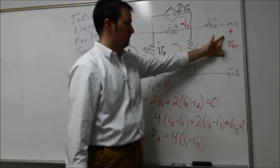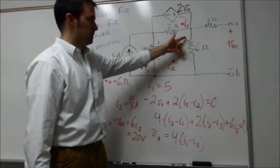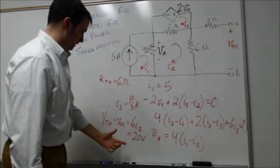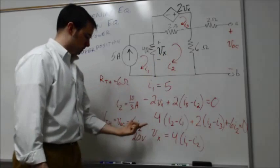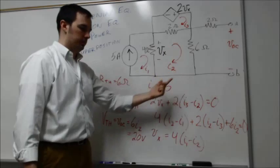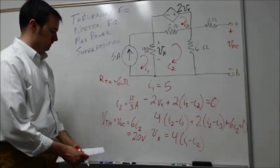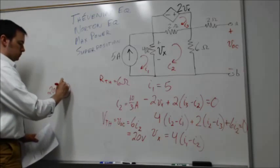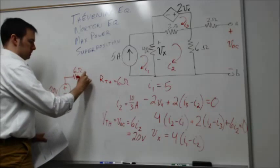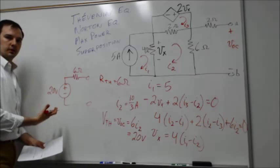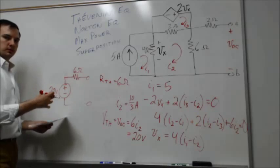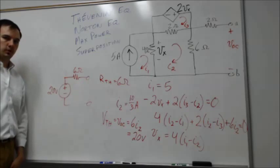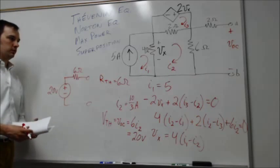The voltage across terminals a and b equals the voltage drop across the six-ohm resistor, because there's no current through the two-ohm resistor connected to terminal a, hence no voltage drop there. So V_TH = 6 × (10/3) = 20 volts. The Thevenin equivalent circuit is a 20-volt source in series with a 6-ohm resistor. This can also be transformed into a Norton equivalent: a current source in parallel with the 6-ohm resistor.